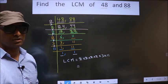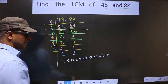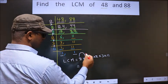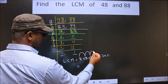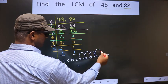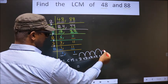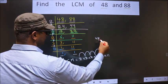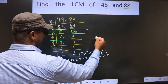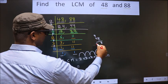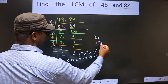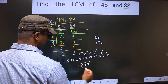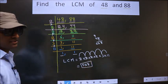Let us multiply all these numbers. That is 2×2×2×2×3×11. 2×2=4, 4×2=8, 8×2=16, 16×3=48, 48×11: 11×8=88, 11×4=44 plus 8 gives us 528. So 528 is our answer.